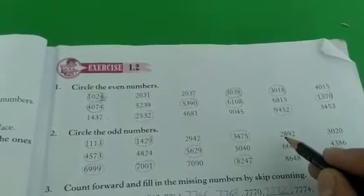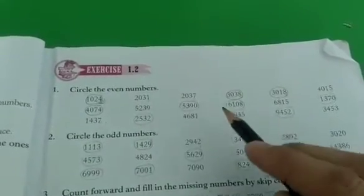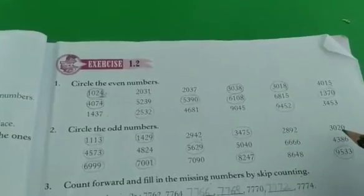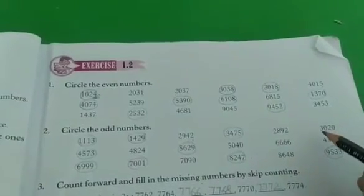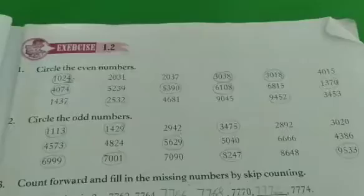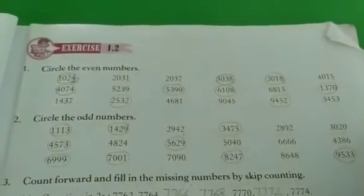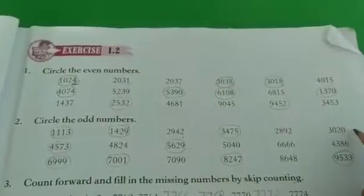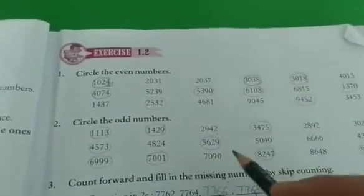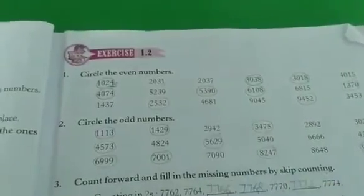Next, 2892 — at the ones place is 2. 2 is an even number, so we will not circle it. Next, 3020 — at the ones place is 0. 0 is not an odd number, so we will not circle it. The next two lines you need to try on your own at home.